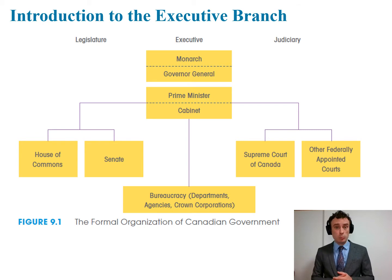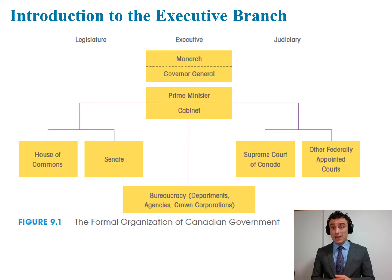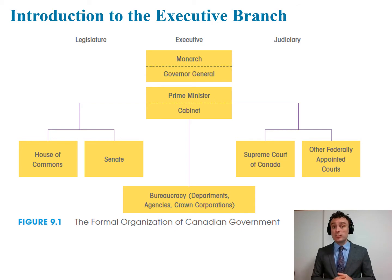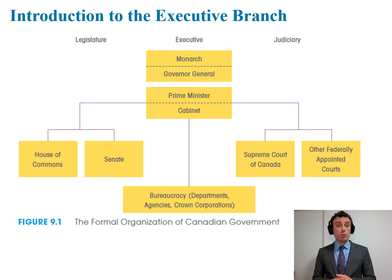Let's take a look at figure 9.1 from our Brooks textbook — the formal organization of Canadian government. Today our focus is on the center of this chart: the executive, which includes the monarch, the Governor General, the Prime Minister, and the Cabinet, as well as the nonpartisan bureaucracy, which includes federal departments, agencies, crown corporations, and more. Next week we'll explore the legislature in more depth, including the House of Commons and the Senate. We've already discussed the role of the judiciary in Canadian politics, especially its enlarged role after the Charter of Rights and Freedoms in 1982 was adopted.